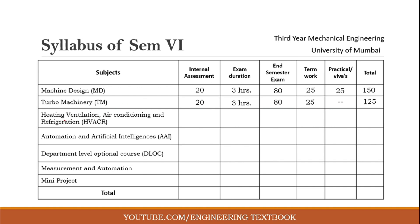Our next subject is Heating Ventilation Air Conditioning and Refrigeration (HVACR). It has 20 marks internal assessment, 3 hours exam duration, 80 marks end semester examination, 25 marks term work, and 25 marks practical and viva. Therefore the total we get for HVACR is 150 marks.